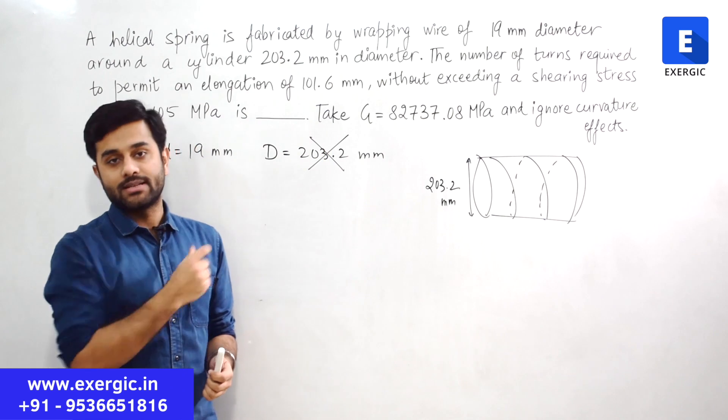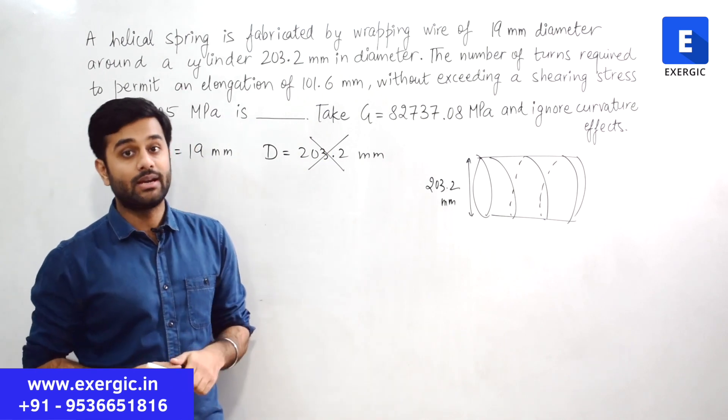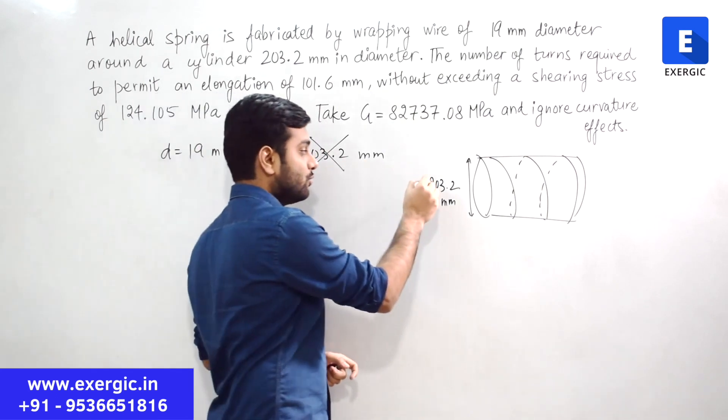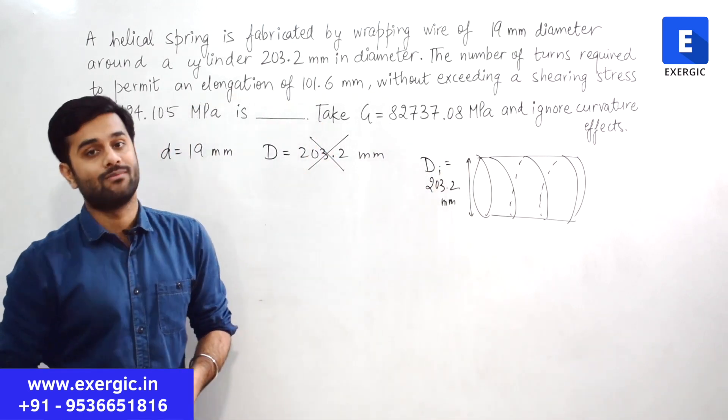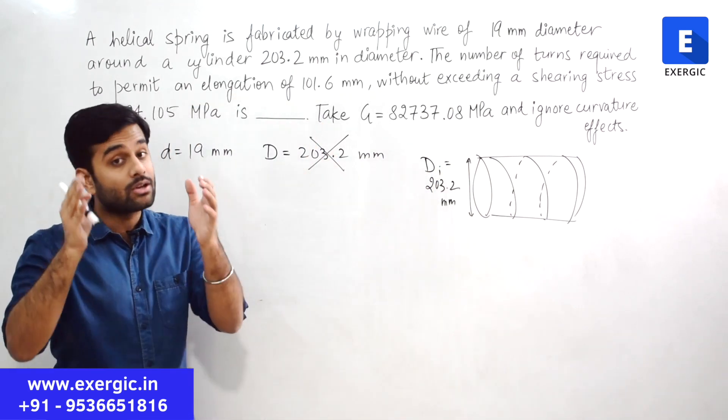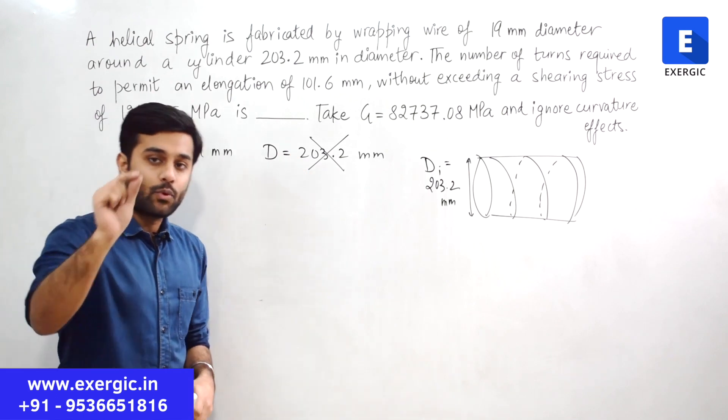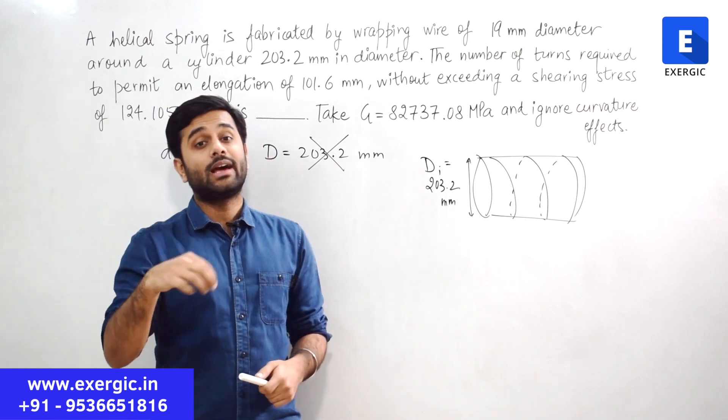We know what is capital D from the discussion of springs. Capital D represents mean coil diameter. It is not the inner coil diameter. It is not DI. 203.2 is actually DI. It is not DO or mean coil diameter. So if question gives you DO or DI please don't take it directly as D.